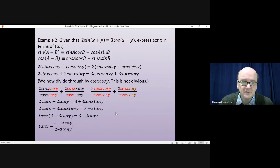And then dividing through, we have tan x = (3 - 2tan y)/(2 - 3tan y). And that is what the question asked us to do. It asked us to express tan x in terms of tan y, and that's what we have there. Tan x is the subject of the equation.